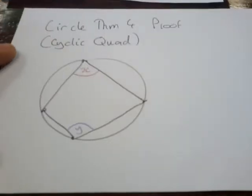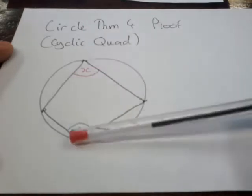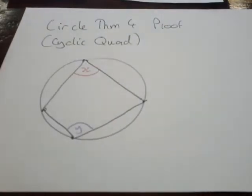Okay, so a second ago we learned circle theorem 4, that the opposite angles in a cyclic quadrilateral add up to 180 degrees. How do we know it's always true? Well, here's the proof. We want to find out what x plus y is. How do we do this?